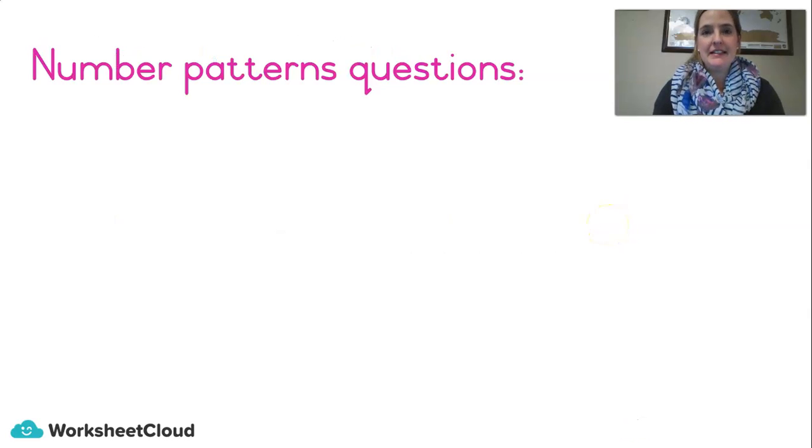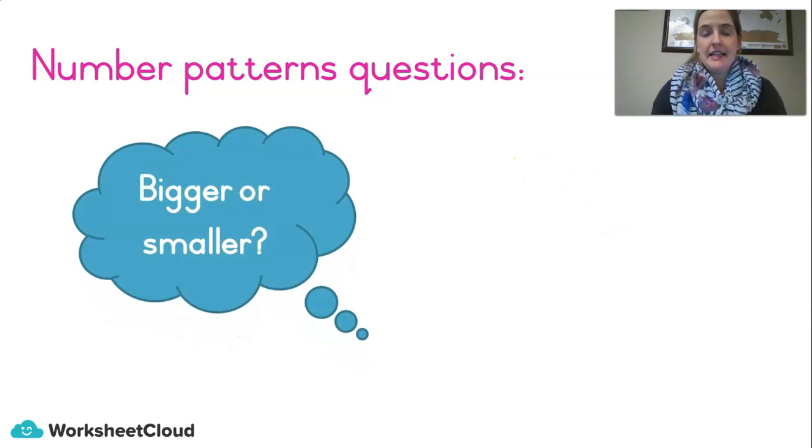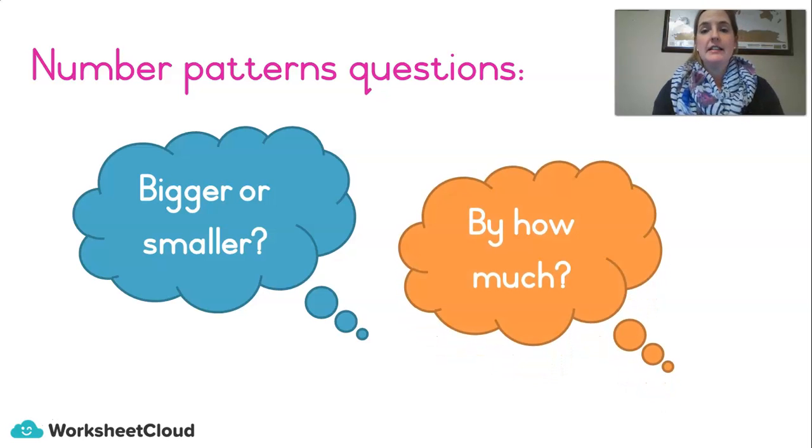Now we're going to do number patterns and we had two big questions in our toolbox that we have to ask ourselves if we are going to do a number pattern. The first one is: are the numbers getting bigger or smaller? That's the first question. We look at our number pattern, we don't panic, we calmly ask ourselves: is the number getting bigger or smaller? The next question we ask ourselves is: by how much? How much bigger? Did it go exactly to the next number, just by one bigger? Did it go by two bigger or three bigger? Or is it going smaller? Did it go just one smaller or two smaller? And once we know that, then we can easily fill in all the answers. So these are two tools we've got in our number toolbox when we're doing number patterns.